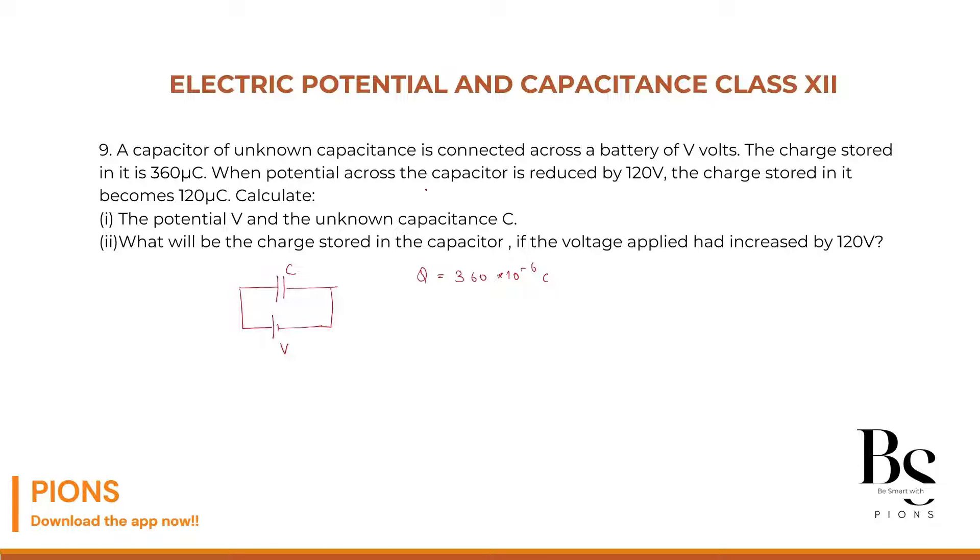When the potential across the capacitor is reduced by 120 volt, the new voltage will be V dash, that is V minus 120. The charge stored in this will be Q dash, which will be 120 microcoulomb.